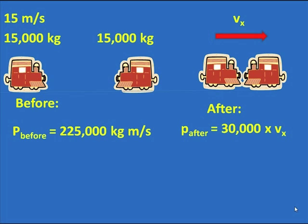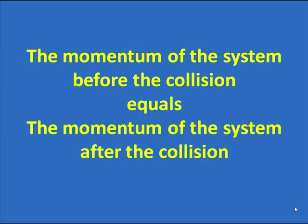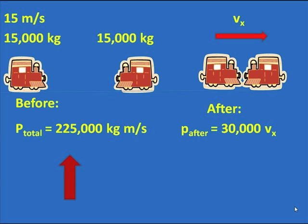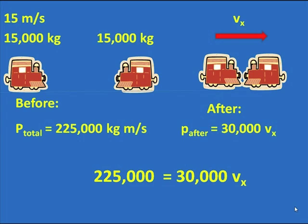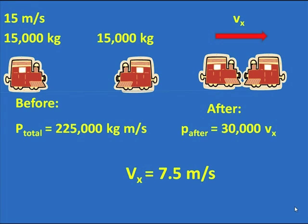And so I have the momentum before and the momentum after. And this is how we do the questions. We set up the momentum before. We set up the momentum afterwards. And the momentum of the system before equals the momentum of the system after the collision. Therefore, this 225,000 kilograms meters per second can be set equal to the 30,000 times Vx. So I set up the equation. I solve the equation. And I find the answer is 7.5 meters per second.